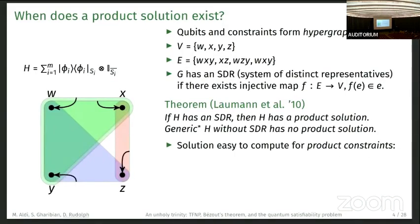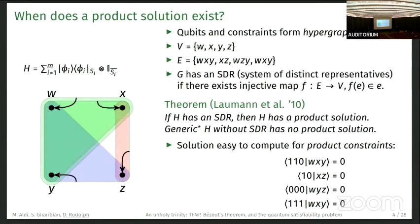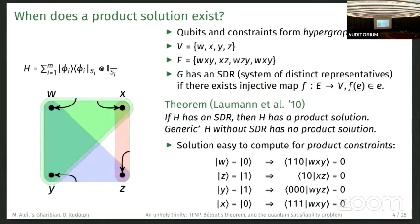One side note is that the solution is actually very easy to compute if we have product constraints. For example, for WXXY, we put the constraint 1, 1, 0. We have matched to this edge WXY the vertex W, so we just set W to zero, and here we have W equals one.